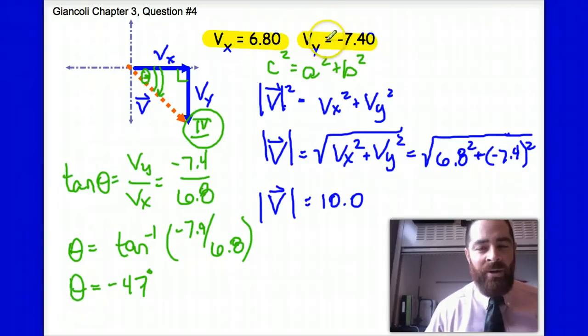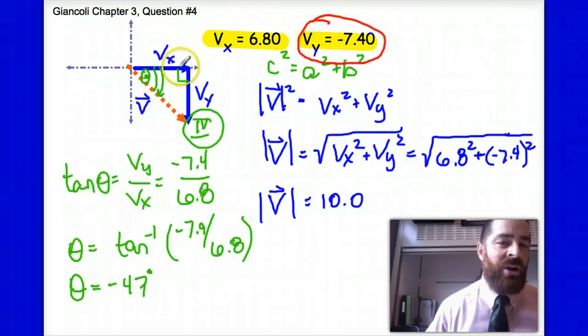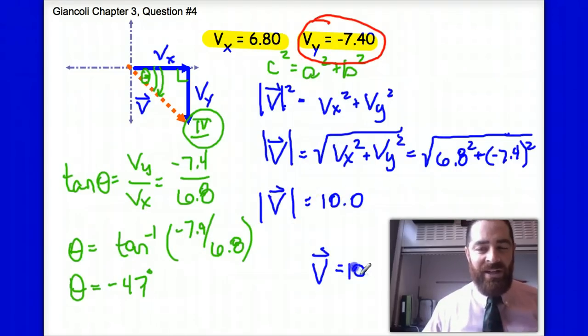So I am expecting it to be in the fourth quadrant. And also, equally important, I'm expecting that angle to be greater than 45 degrees. And the reason is the y component is larger, so it should be larger than 45 degrees. This checks out. My final answer, then, is going to be v is equal to 10 units, and I'm going to go to 3 sig figs, at negative 47 degrees.